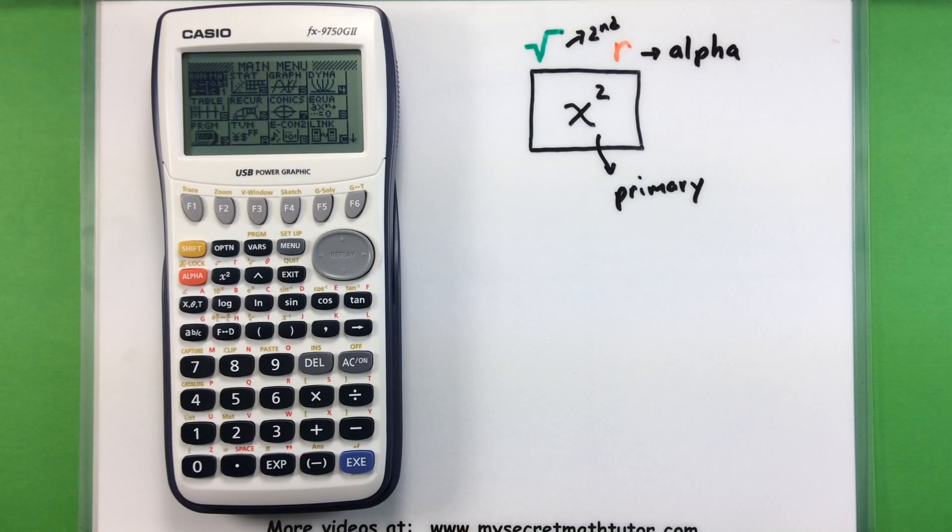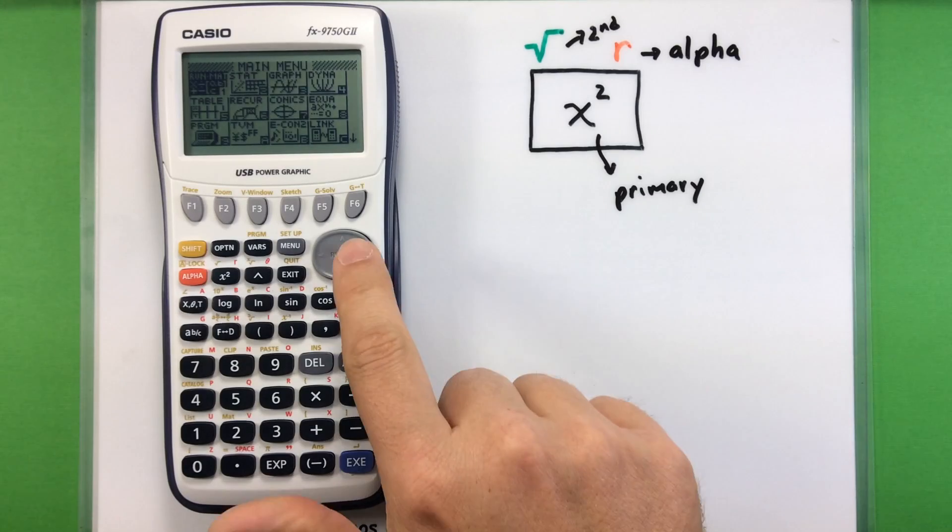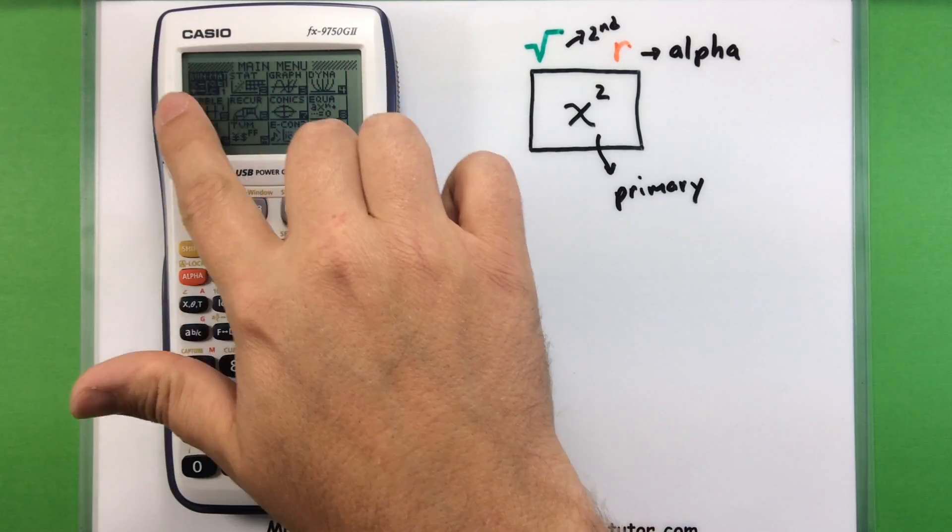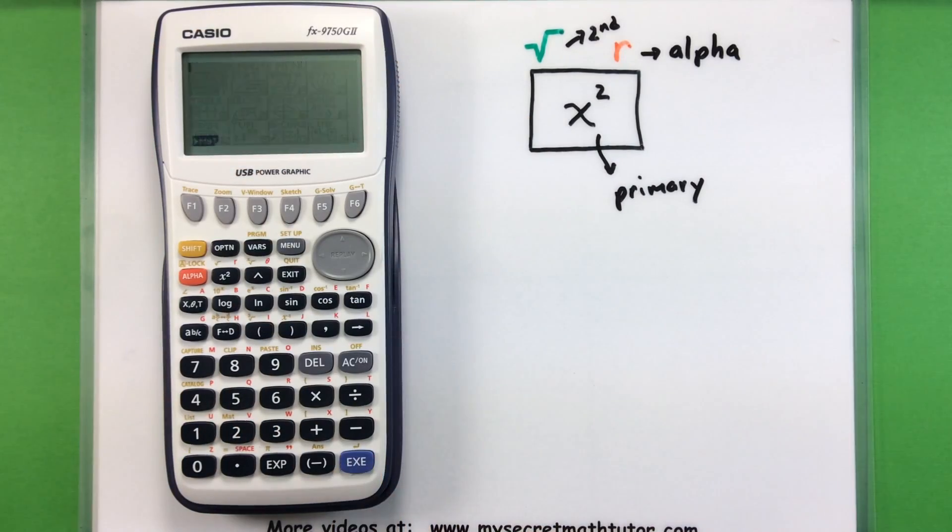All right, so now that we know a little bit more on how the buttons work, we need to take this thing for a test drive, and I need to get to the section of the calculator where I can do a lot of those calculations. This is the run slash matrix mode of the calculator, and it's actually highlighted as one of the first options in the main menu. So, anytime you turn this on, of course, it brings you to the main menu, and it brings you to a list of all kinds of things the calculator can do. It can do statistics, graphing, but what we really want is just some basic calculations, so I'm going to highlight that one, then press my execute button, and I'll get into that particular mode.